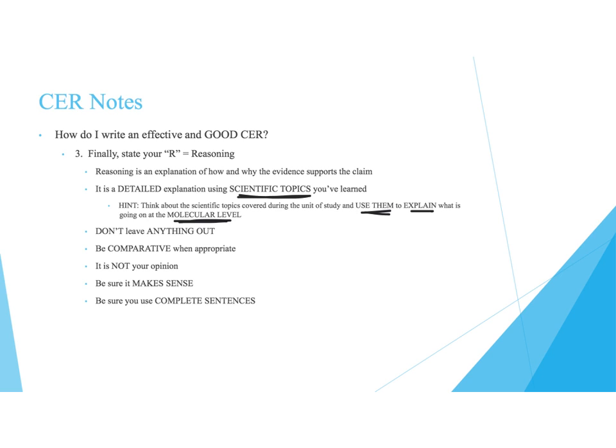Just like with your evidence, don't leave anything out in your reasoning. Be comparative when appropriate — if you choose A, tell me why not B. It is not your opinion, and it needs to make sense. Proofread. It's frustrating when people type something, hit print, and haven't proofread. Grammar mistakes, syntax mistakes, things that just don't make sense — please proofread before you hit print. It will save your grade. Guaranteed.